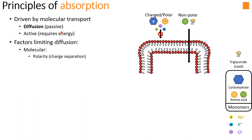There are factors that limit diffusion; one is polarity or charge separation within the molecule. Charged or polar molecules — including carbohydrates, amino acids, and minerals like sodium, chloride, and potassium — have difficulty moving through the nonpolar core of the membrane. On the other hand, nonpolar molecules like lipids and triglycerides don't have the same difficulty because they're not charged, so there's no unfavorable energetic interaction. Nonpolar molecules are already in water, which is polar, so they'll naturally want to move to an area where they're more protected from that charge — toward the nonpolar core of the membrane.